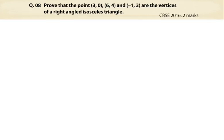The given problem is: prove that the points (3, 0), (6, 4), and (-1, 3) are the vertices of a right-angled isosceles triangle.